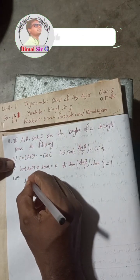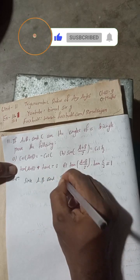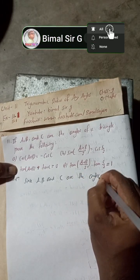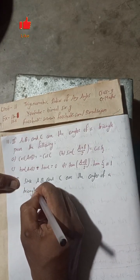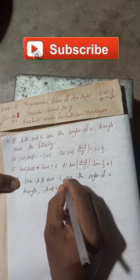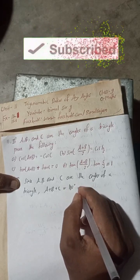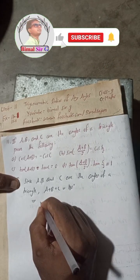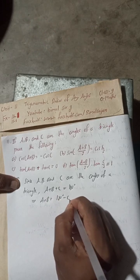Since A, B and C are the angles of a triangle, A plus B plus C is equal to 180 degrees. This implies A plus B is equal to 180 degrees minus C.